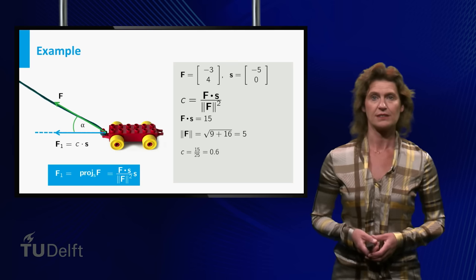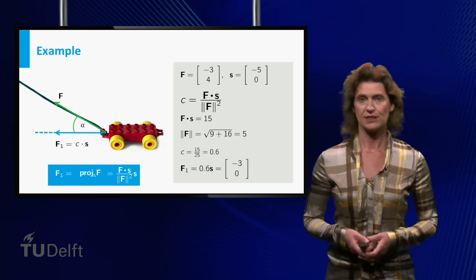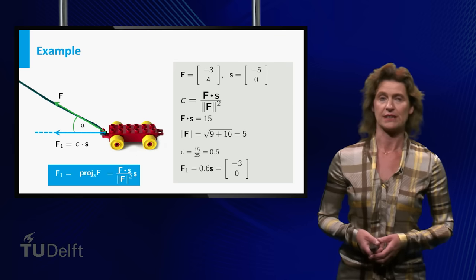This means that the vector F1, the projection of F onto S, is equal to 0.6 times S.